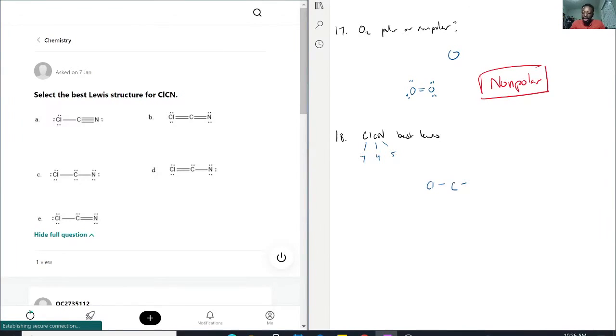Chlorine, based on the octet rule, is sharing one of its seven electrons. Nitrogen is right now sharing one of its five.